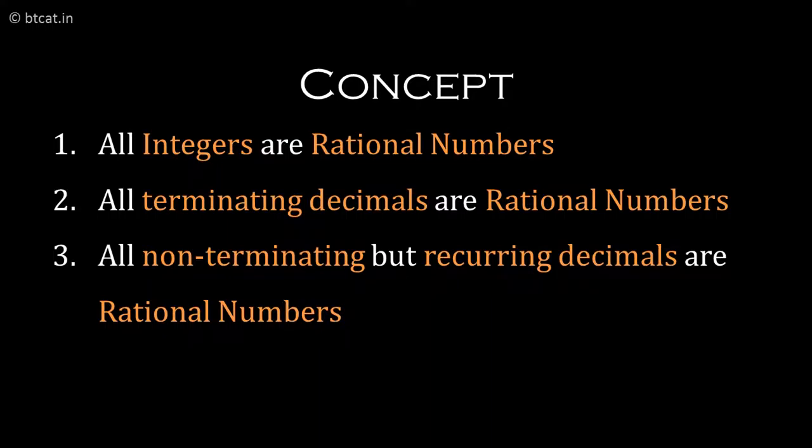Let us recap the three rules: First, all integers are rational numbers. Second, all terminating decimals are rational numbers. And third, all non-terminating but recurring decimals are rational numbers.